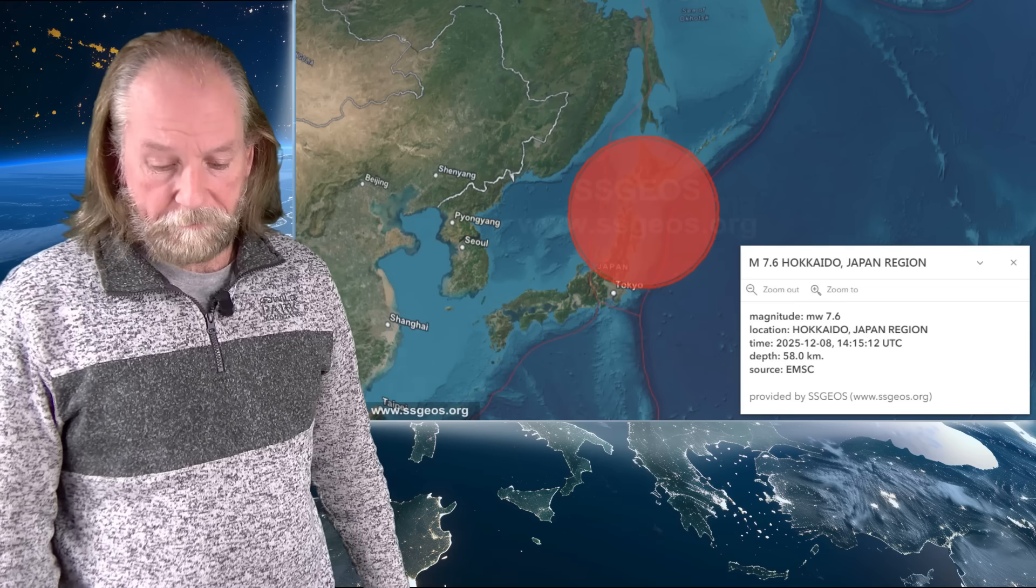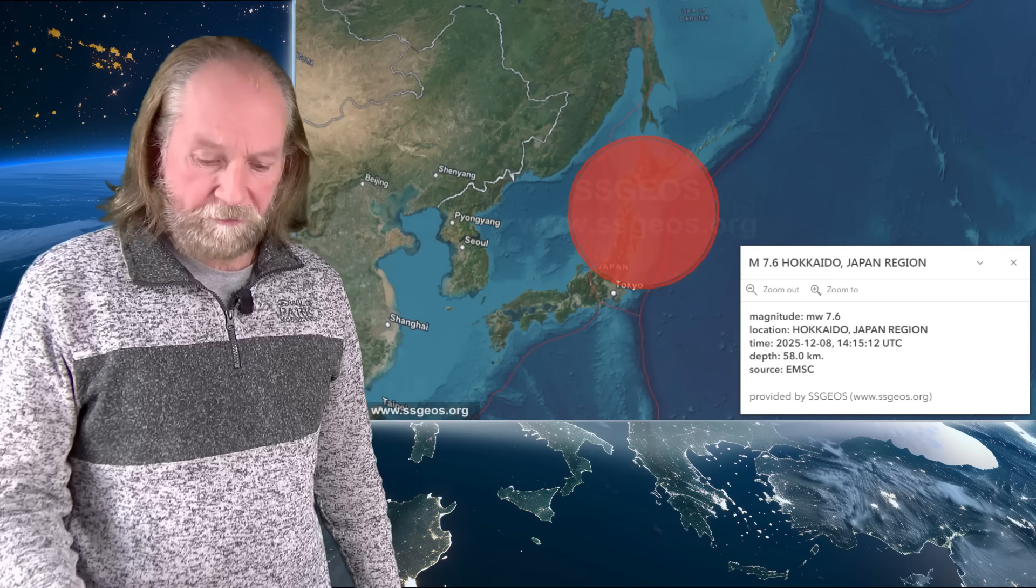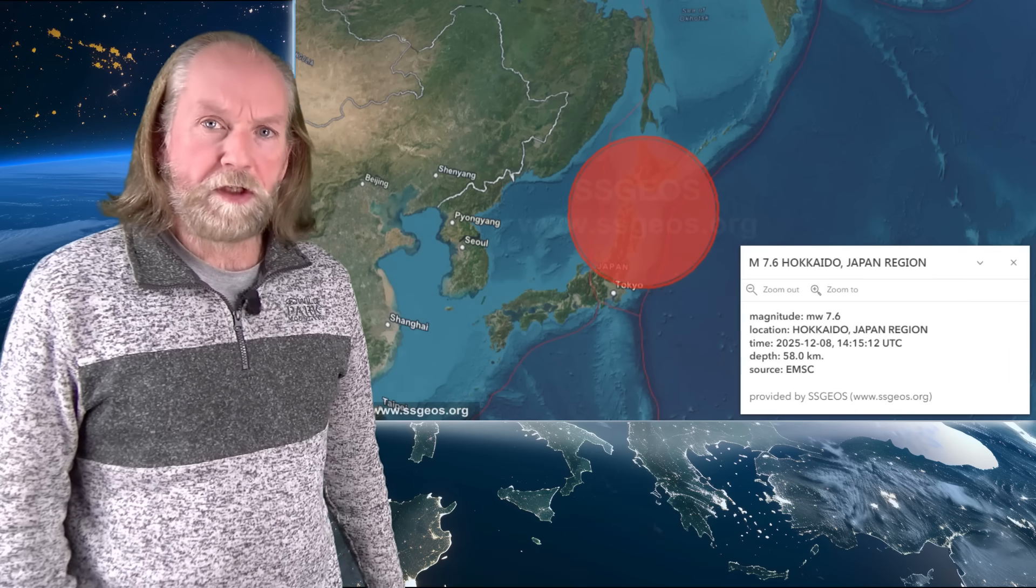Tokyo could have a magnitude 7 earthquake, the Nankai Trough could have 8.5, and these large earthquakes that we had in July and now just a 7.6 definitely change the stress distribution in the region.